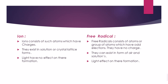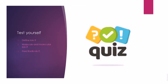Here is a comparison between ions and free radicals. Ions consist of atoms that carry charges and exist in solution form or crystal lattice. Light has no effect on their formation. Free radicals consist of atoms or groups of atoms with odd, unpaired electrons and have no charge. They can exist in open air or in solutions. Light is the most important factor in the formation of free radical structures.